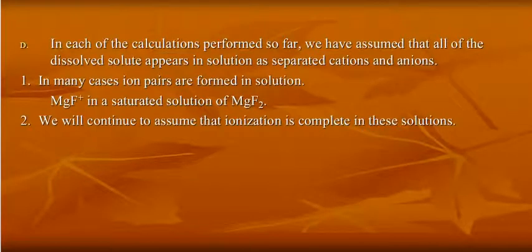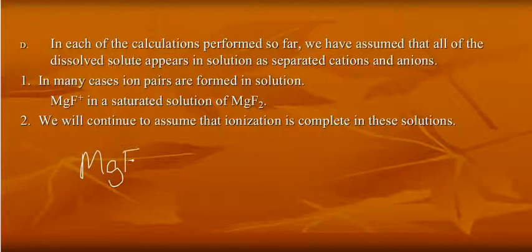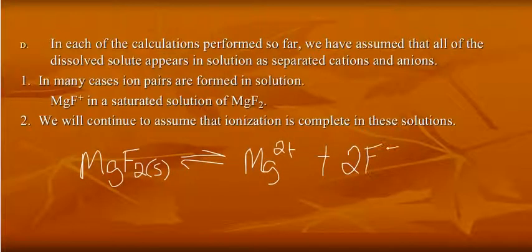And in each of the calculations performed so far, we've assumed that all of the dissolved solute appears in solution as separated ions. For example, if we have a solution of magnesium fluoride, we've assumed that it completely separates into magnesium ions and fluoride ions. But what can happen is, since magnesium ions are positive and fluoride are negative, they can combine into what are called ion pairs. It is possible, but for our purposes, we're going to assume that ionization is complete. So we will continue to write equations like this.